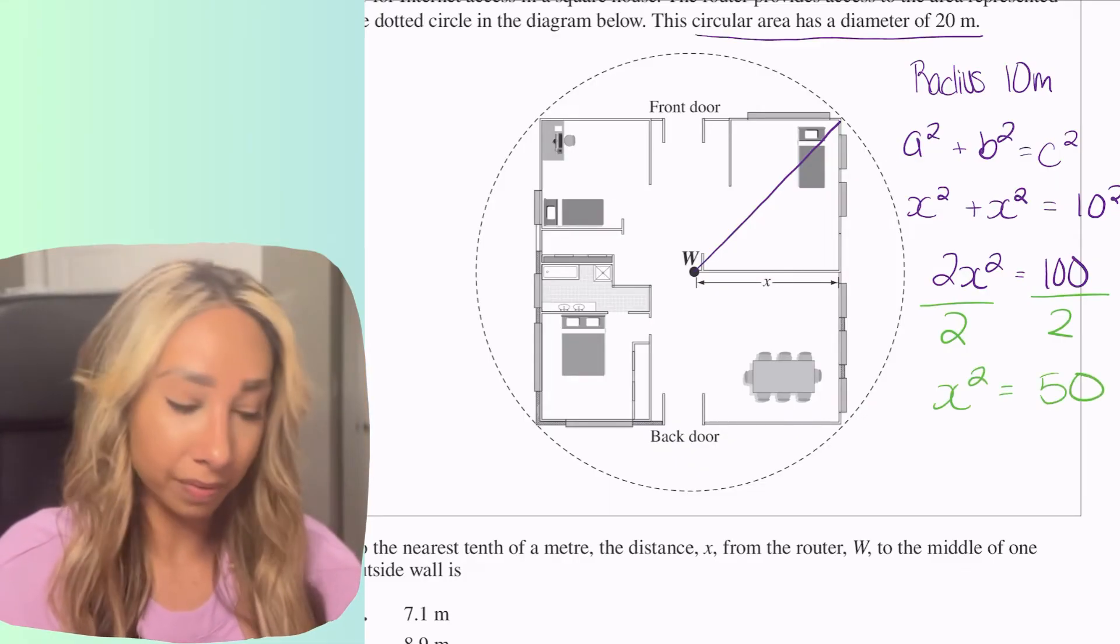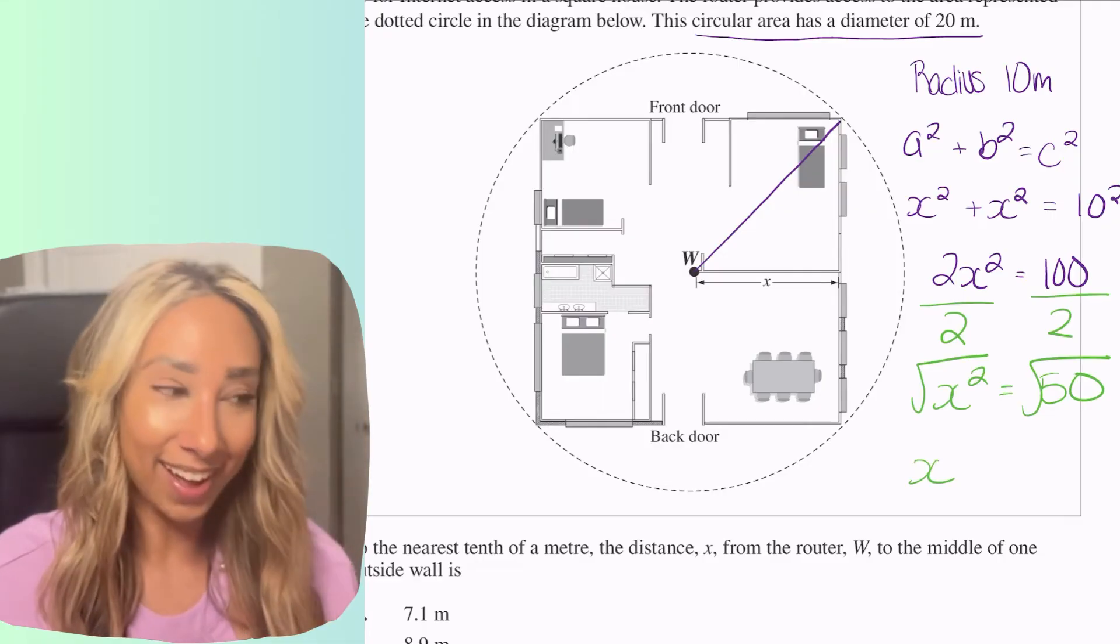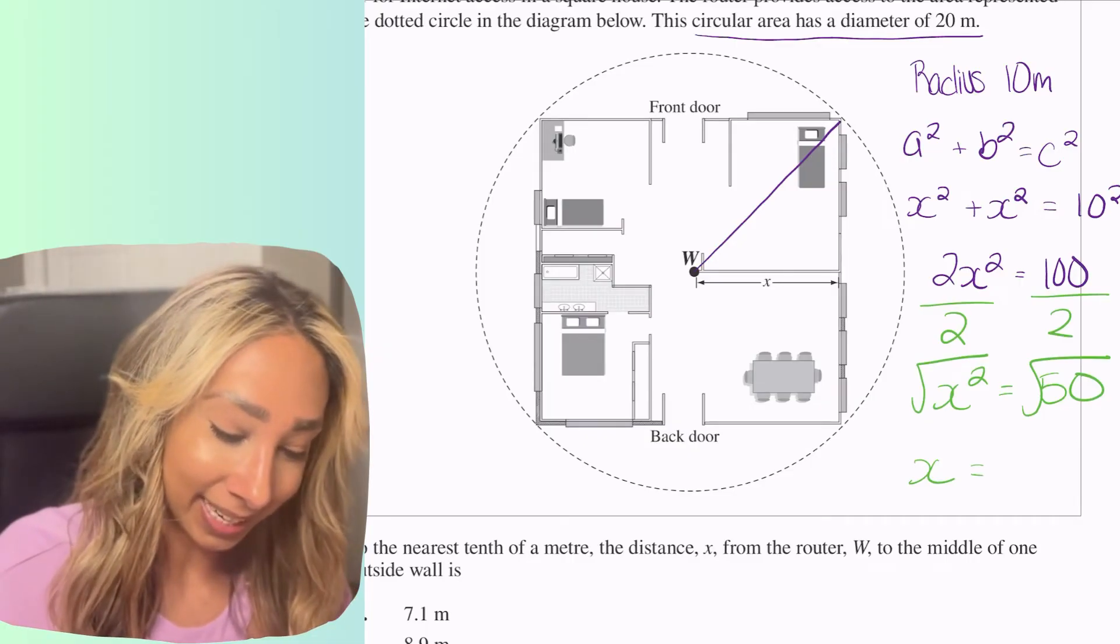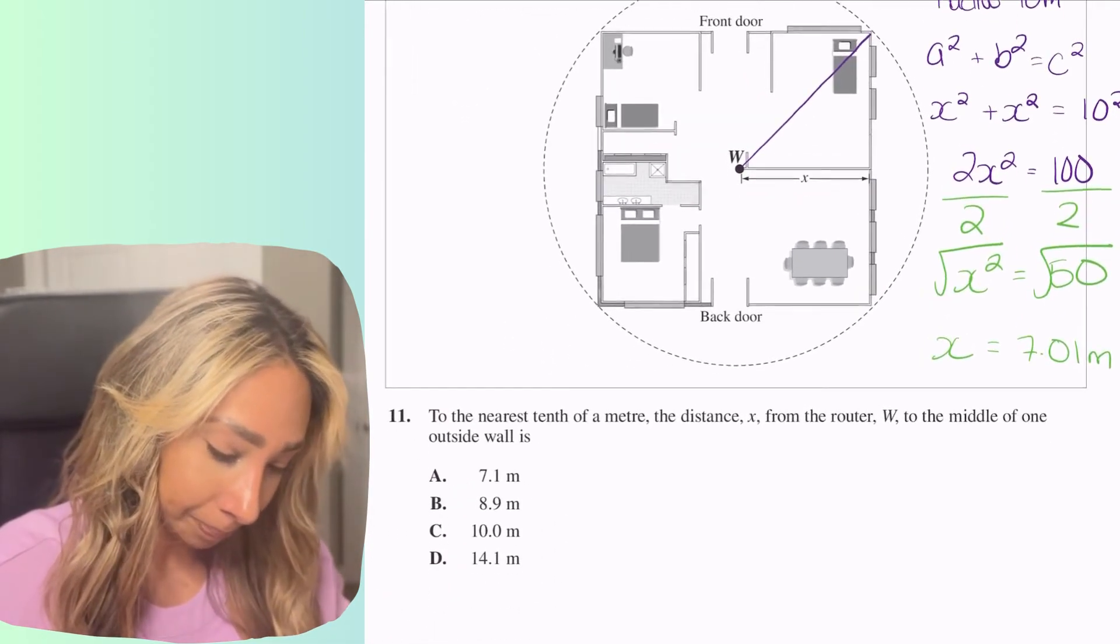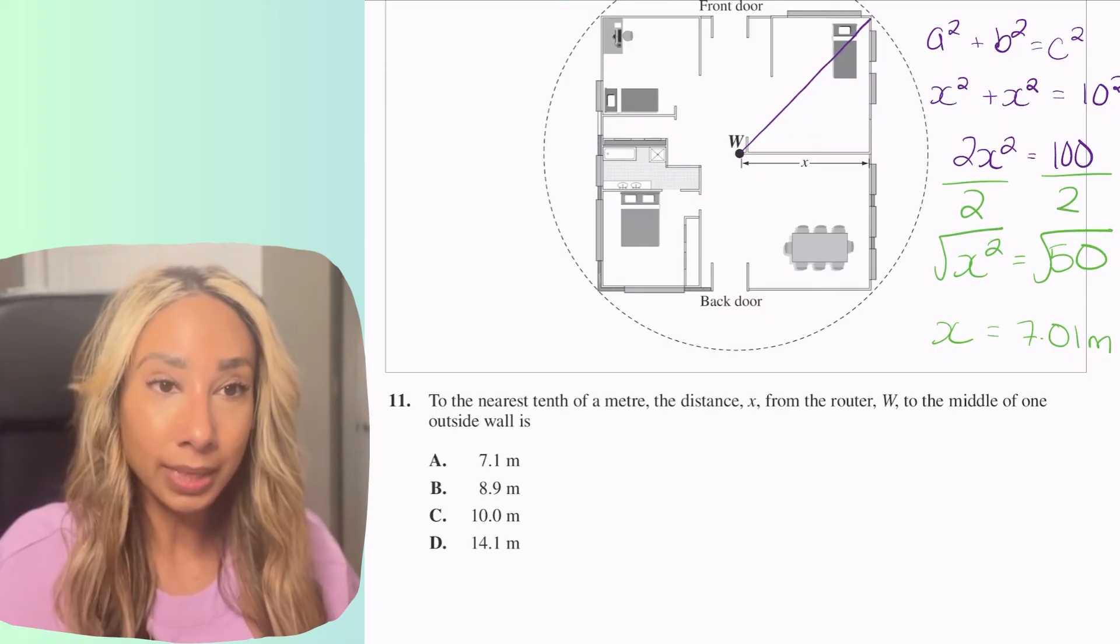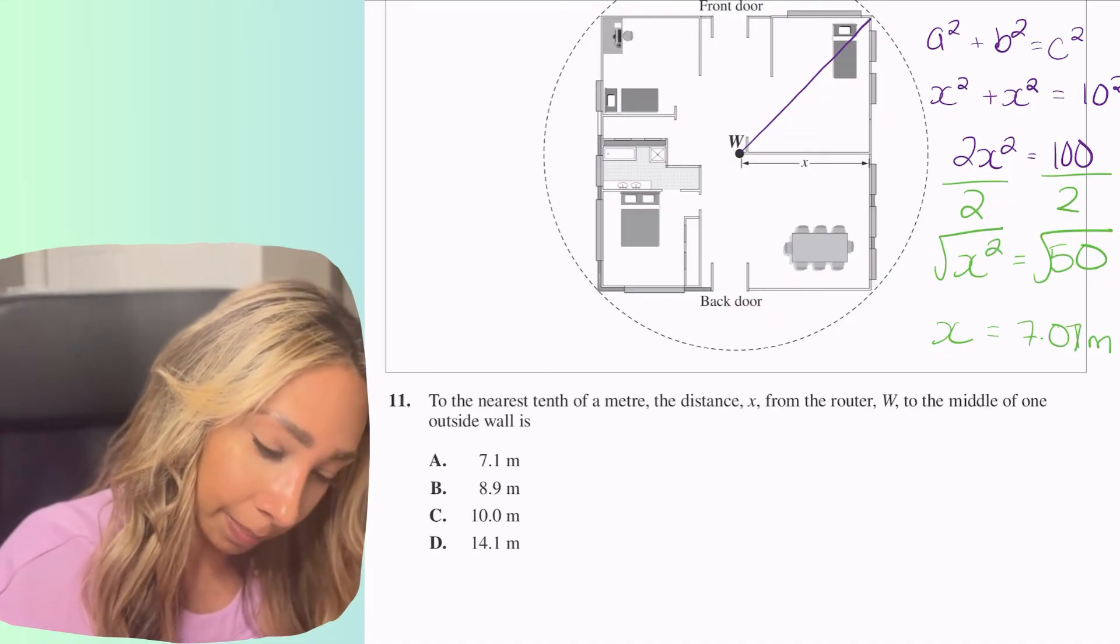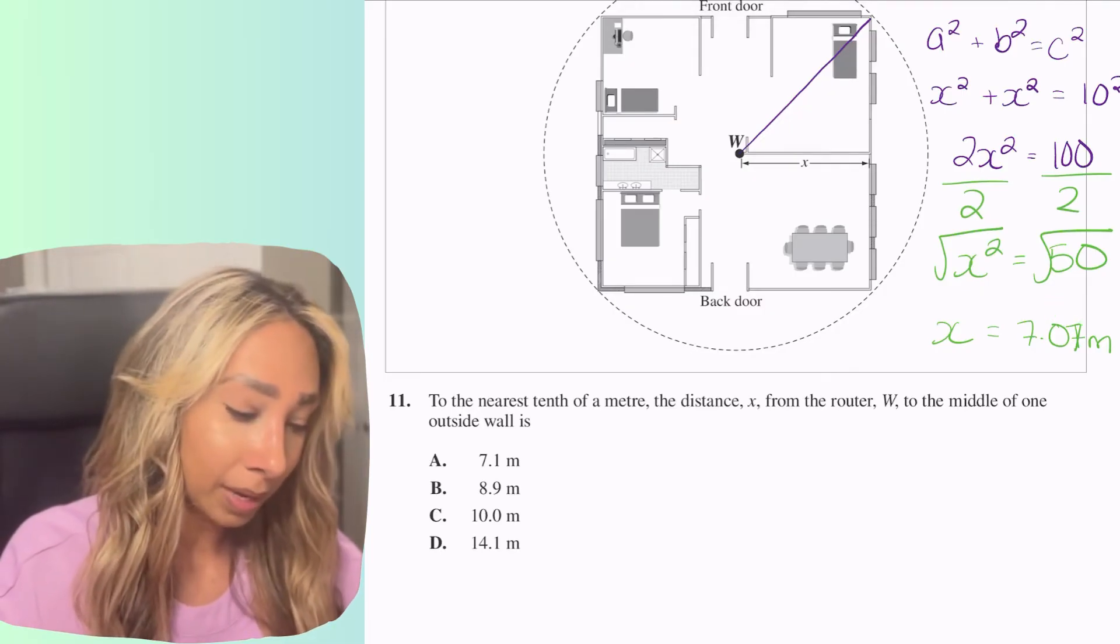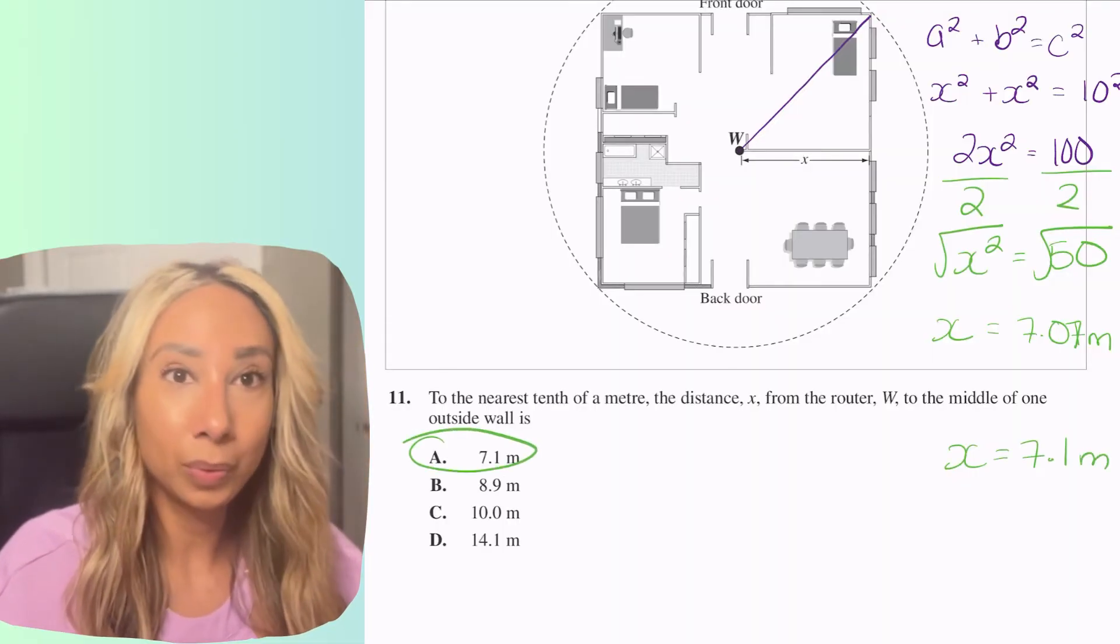Now I can take the square root of that. Unlike part a of the exam, with part b you get your calculator so you can just take the square root of that and that's going to equal 7.01 meters. Okay, so if I'm looking at this based on the options we do need to round to the nearest tenth of a meter. The nearest tenth of a meter is going to tell me the zero is going to round up leaving me with x equals 7.1 meters or the answer which is a.